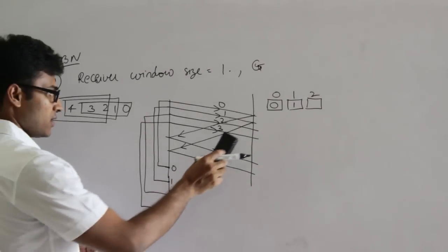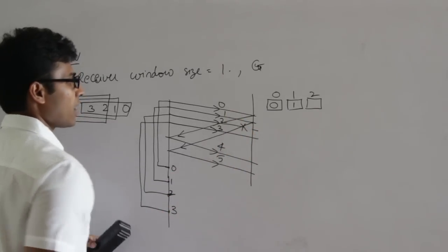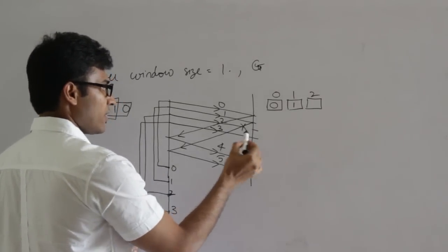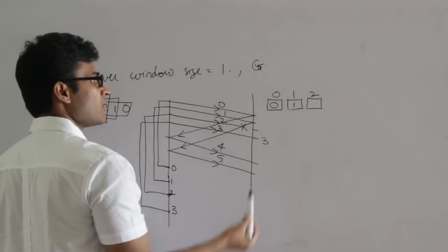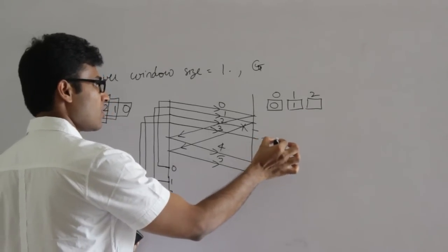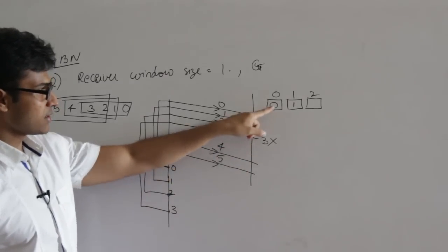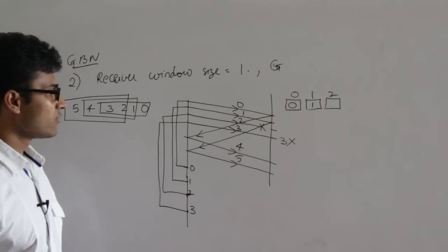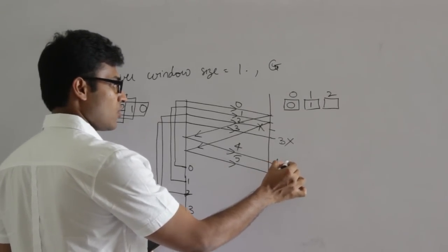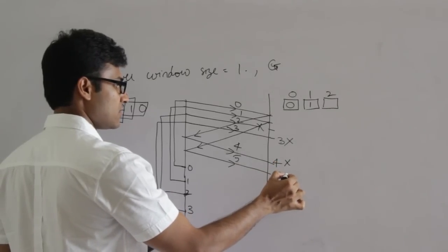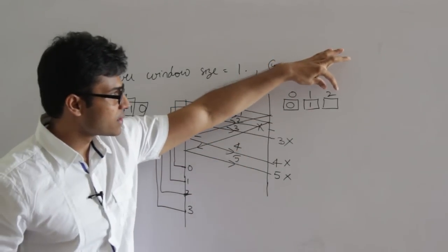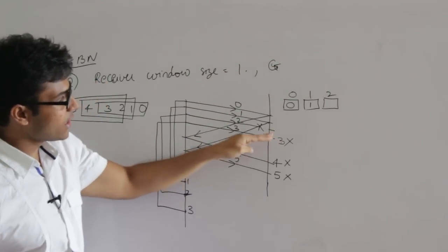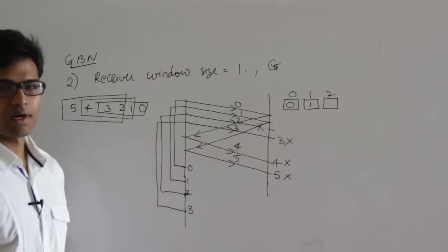Now let's say packet number 2 is lost. At the receiver side, it was waiting for packet 2 but didn't receive it. When it gets packet 3, it discards it because it's still waiting for packet 2. Even if packet 4 arrives, the receiver discards it. Even packet 5 is discarded. Since receiver window size is 1, it always waits for only one specific packet and discards any out-of-order packets.